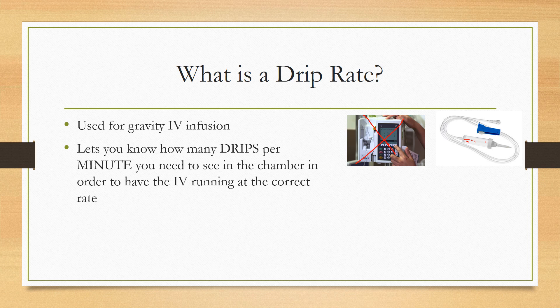So an IV drip rate lets you know how many drips per minute you need to see in this chamber in order to have the IV running at a correct rate. The major unit for this is going to be drips per minute. GTT stands for drips.